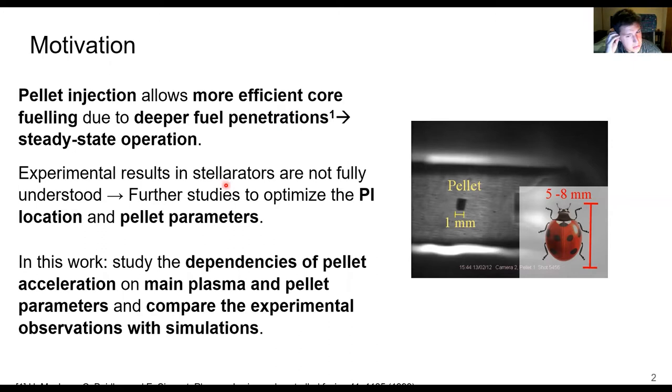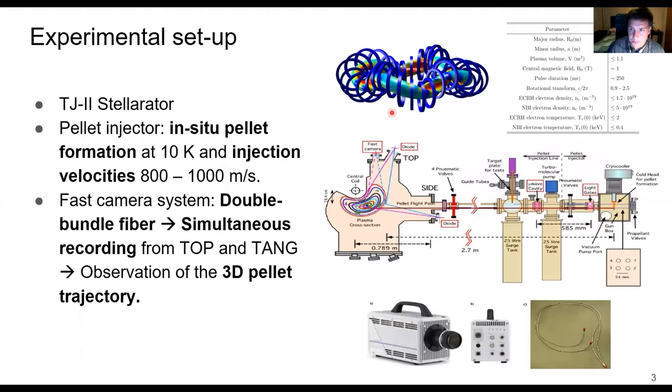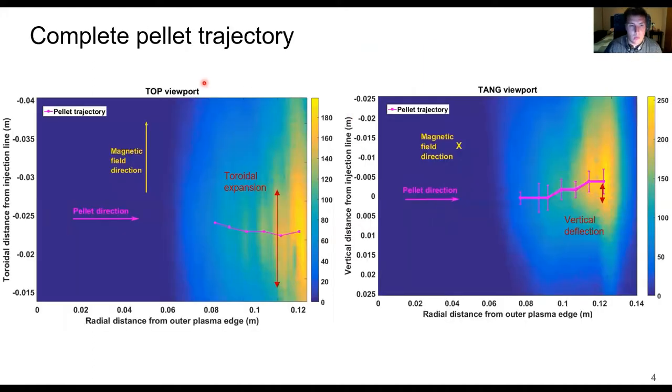In this work, we will focus on the study of the dependencies of the pellet acceleration on the main plasma pellet parameters and to compare the experimental observations with the prediction from simulation. For that, we will use the TJ-II stellarator and its pellet injector, whose schematic is shown here. In addition, we will use the fast camera system, which was recently upgraded with a double bundle fiber that allows the simultaneous recording from the top and tangential viewports and therefore the observation of the three-dimensional pellet trajectory.